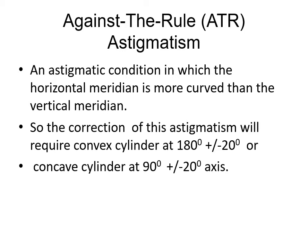Against-the-rule (ATR) astigmatism is a condition in which the horizontal meridian is more curved than the vertical meridian. The opposite correction to WTR is required — a convex cylinder at 180°. This is generally seen after cataract surgery when an incision is taken at the superior limbus, which changes the curvature of the cornea, resulting in against-the-rule astigmatism.